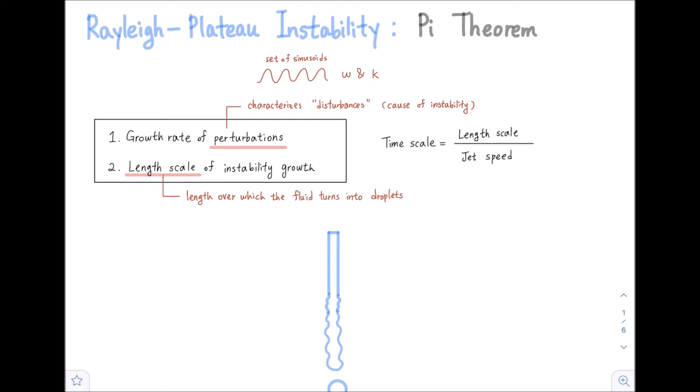These perturbations or disturbances can be expressed by a set of sinusoids, or sine functions, that have a certain value of omega and a certain value of k, where omega is the varying growth rate and k is our wave number. These sinusoidal functions are only limited in number, meaning only a limited number of these disturbances are actually unstable.